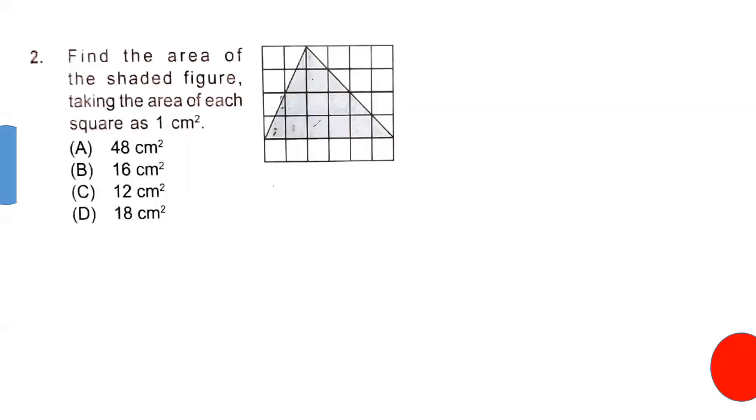Now if you see this question, find the area of the shaded figure taking the area of each square as 1 cm². This is none other than a counting portion. Counting the complete squares: 1, 2, 3, 4, 5, 6, 7, 8. So complete 8 squares. Now we count half of the square.